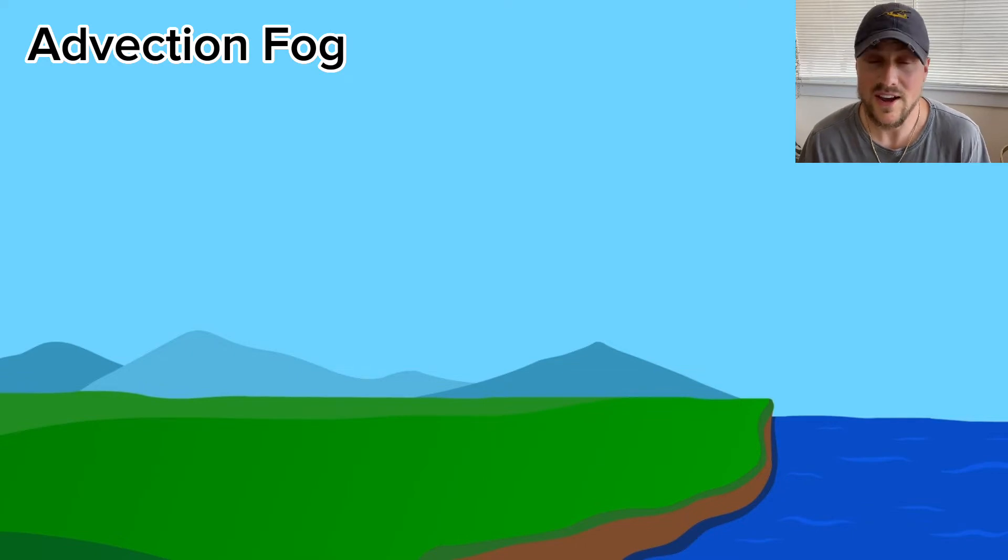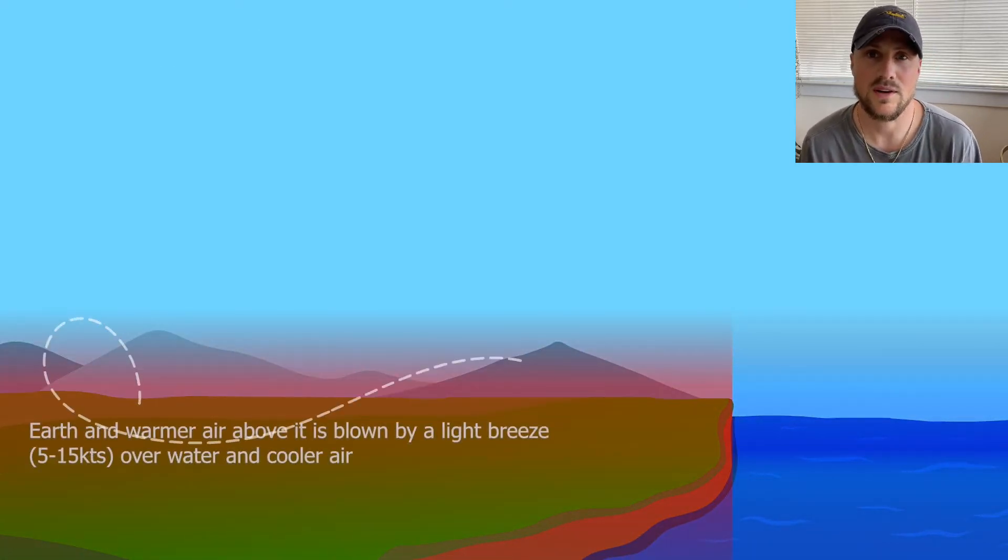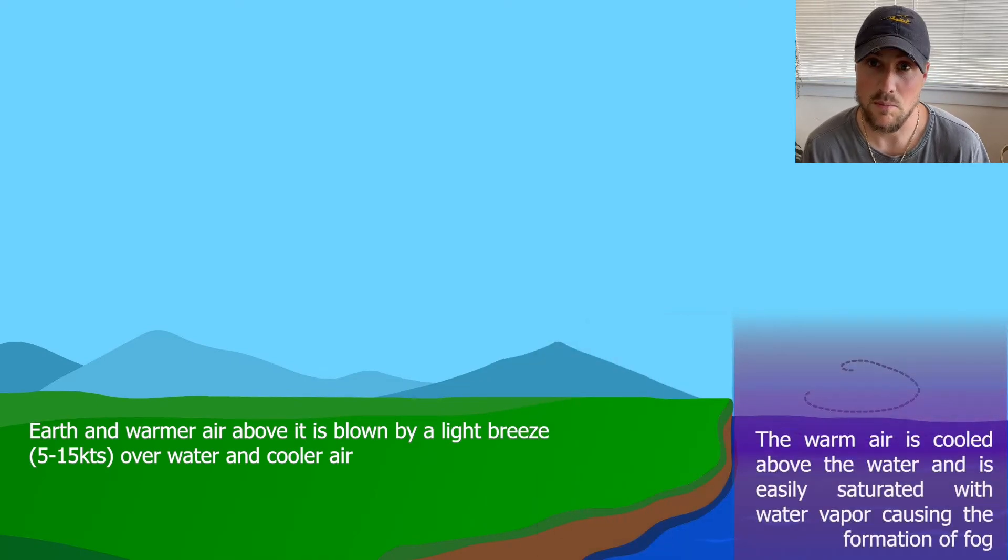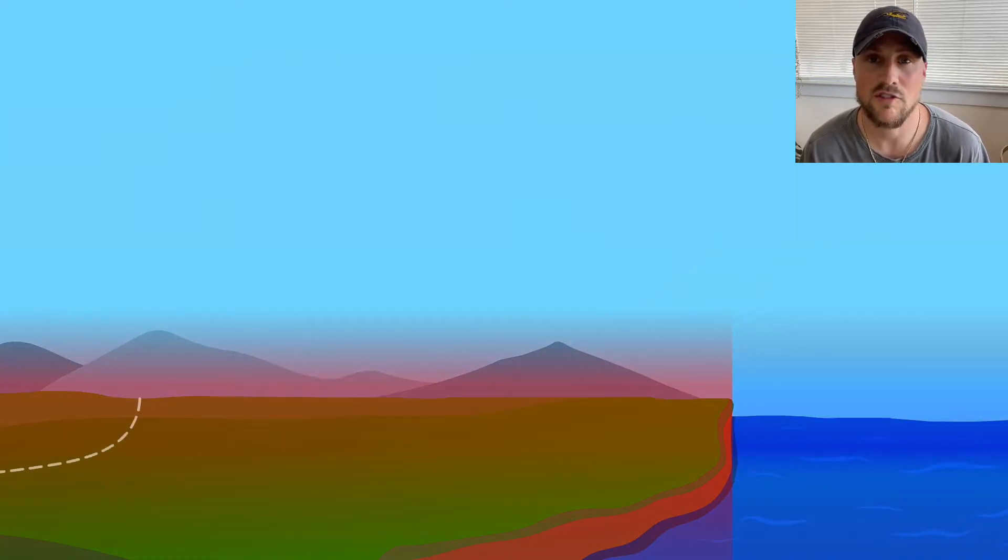So, advection fog is simply caused by the horizontal movement of warm, moist air via winds to an area that is cooler and drier. As the warmer and more moist air moves into the region of cool air, it cools to the dew point and the moisture condenses to form fog.